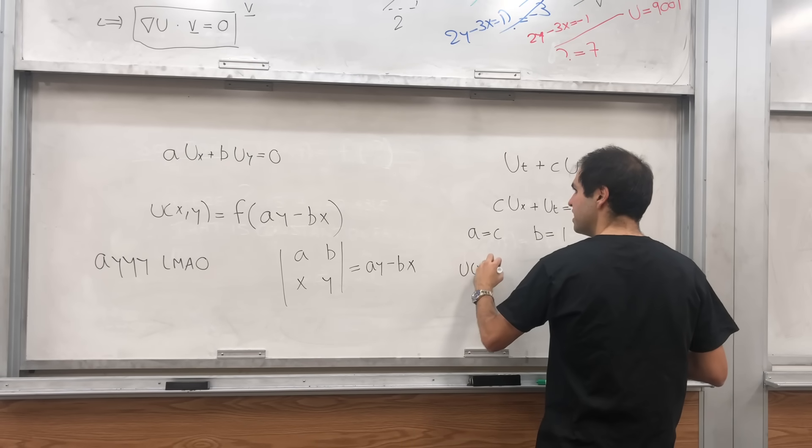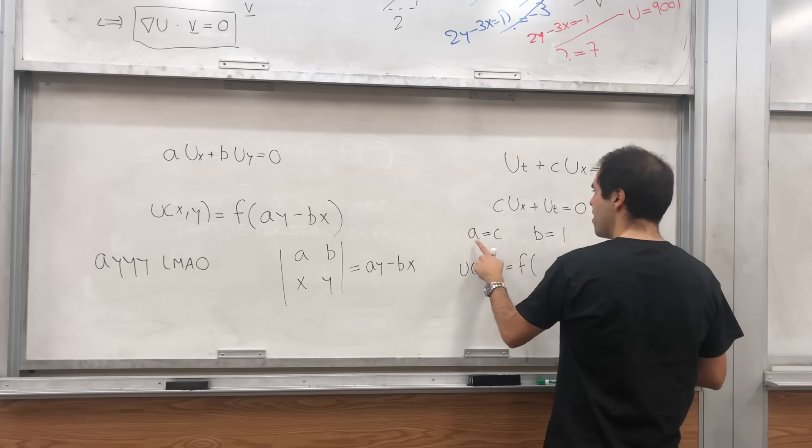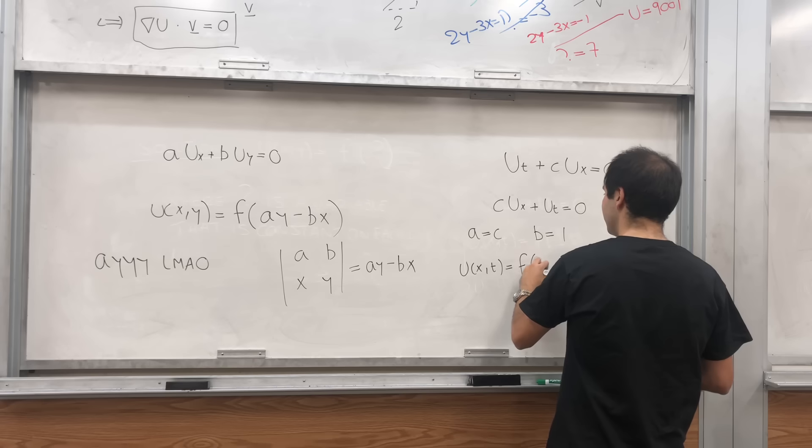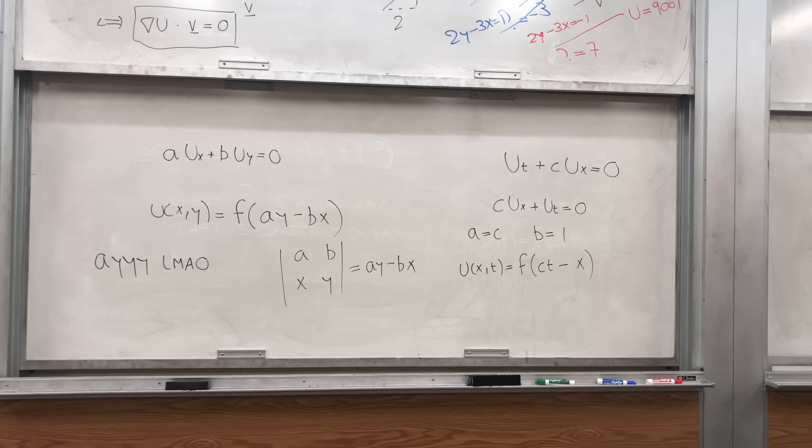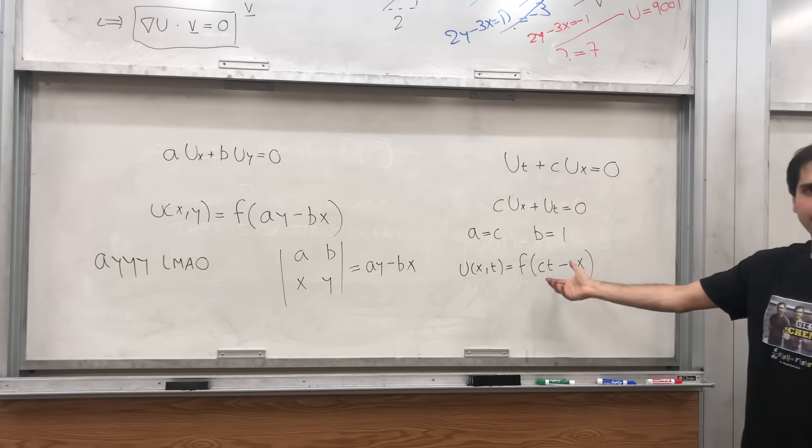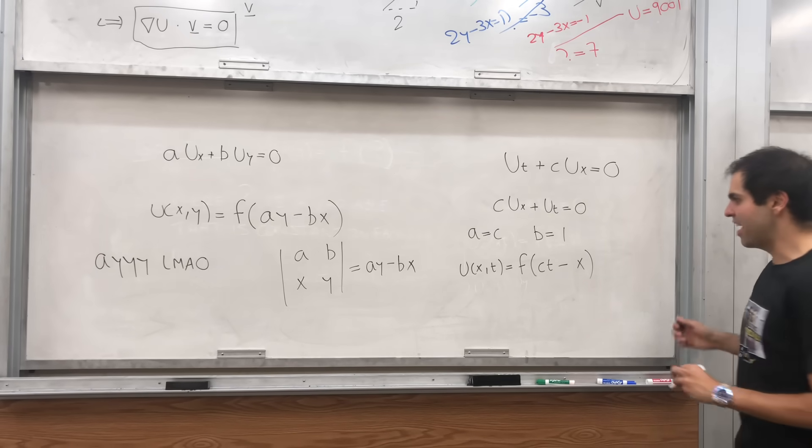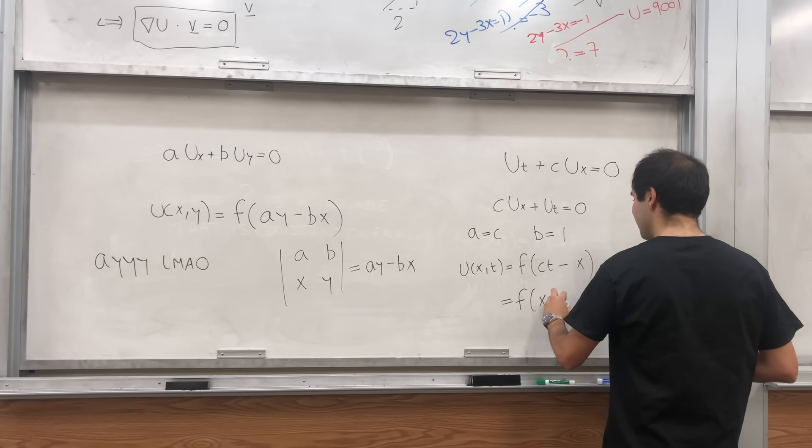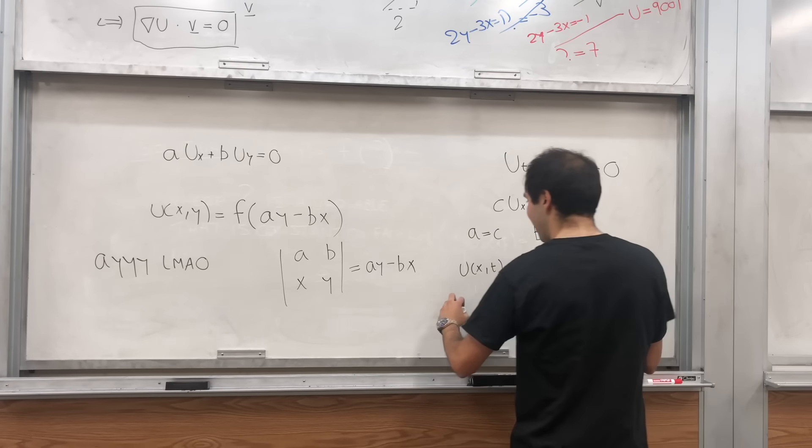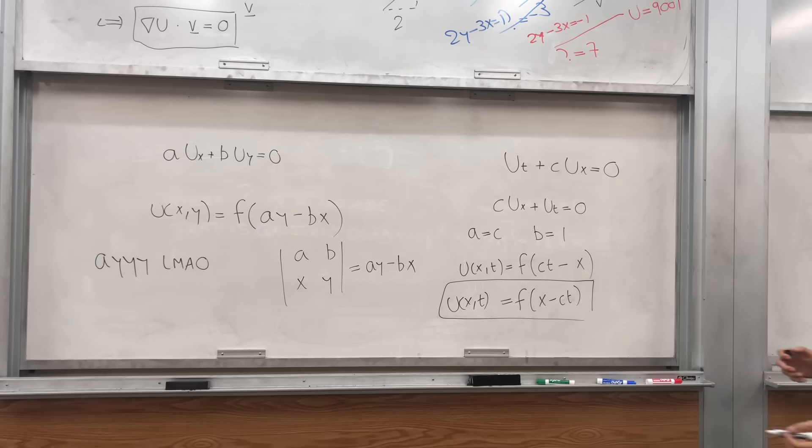So, what we get is u(x,t) equals f of, so, ay, ct minus bx. So, f of ct minus x. But look, f is arbitrary. So, if f of x is a function, so is f of minus x. So, you can actually write this as f of minus that, which is x minus ct. For some possibly different f. And you get the solution, u(x,t) is f of x minus ct. And this is very cool in terms of calculus.